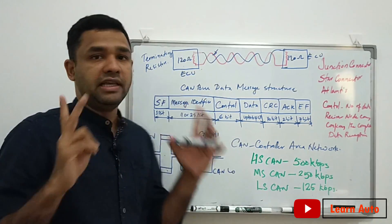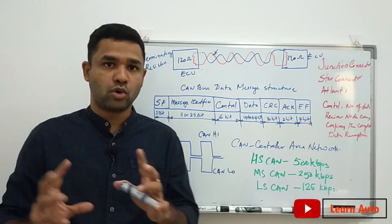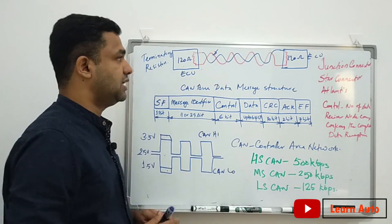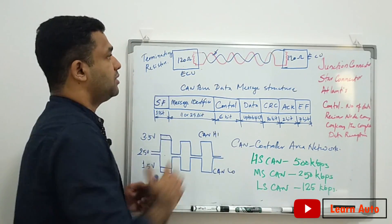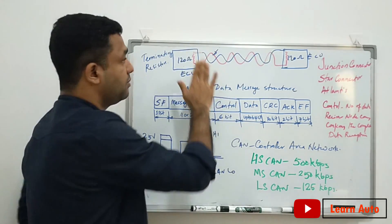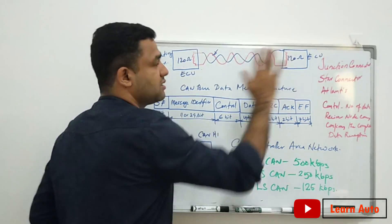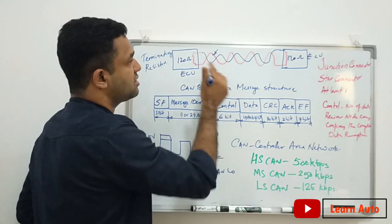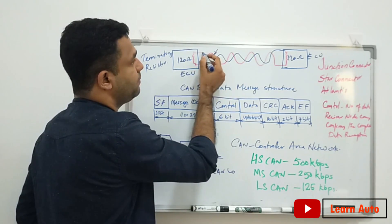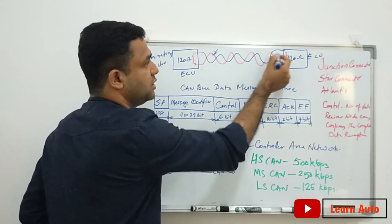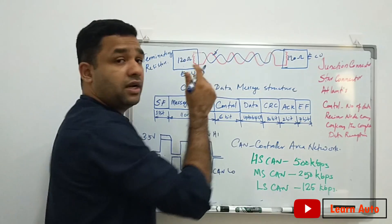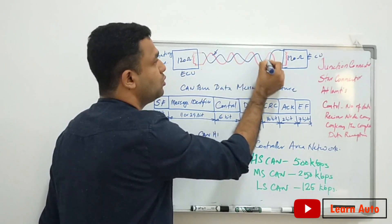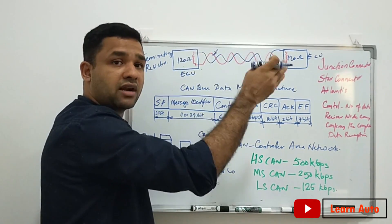We call this the terminal resistance. At the end of the network, the ECU has terminal resistors installed. When looking at the communication, the voltage comes through this wire to the end.